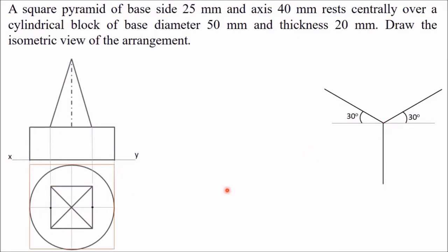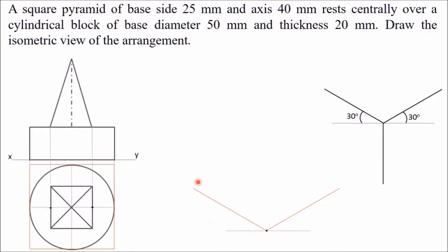Draw a line and mark one point on it. This point represents one of the four corner points of the enclosing square — I am taking the bottom-left corner point. The enclosing square has side 50 mm. From this point draw two lines along the two 30-degree directions, each of length 50 mm. From each endpoint, draw a line parallel to the opposite side to complete the rhombus. This rhombus is the isometric representation of the square enclosing the base circle.